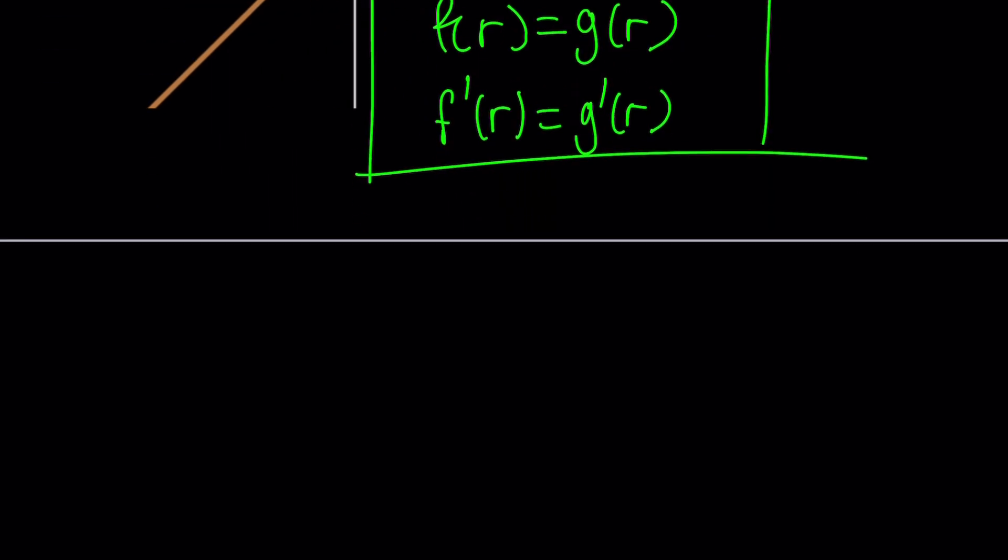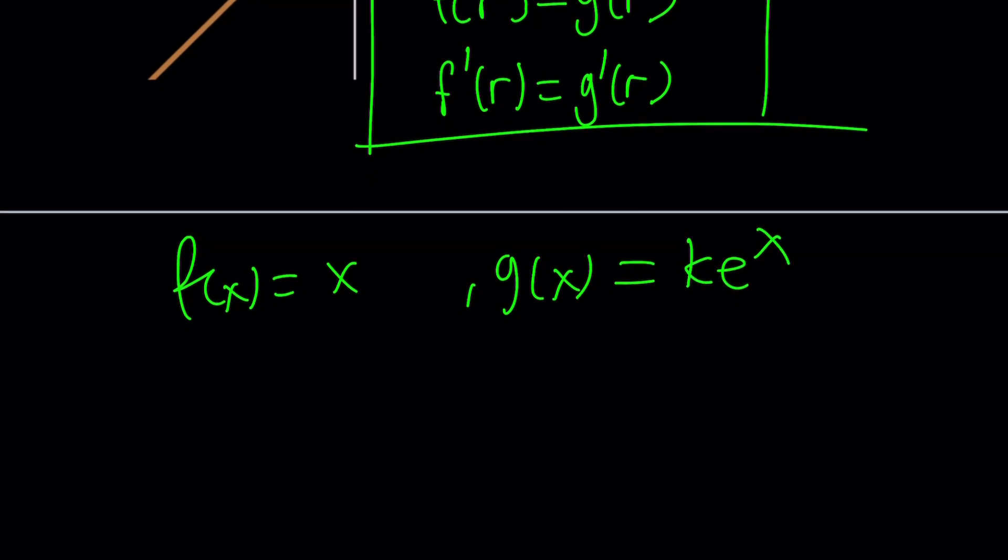Now we do know that f of x is equal to x, and g of x is k e to the x, right? That was our naming. Okay, so now we're going to first replace x with r. And if you do, you get r equals k e to the r. k is a constant. We're trying to find k. We don't know what it is, but we can replace x with r.